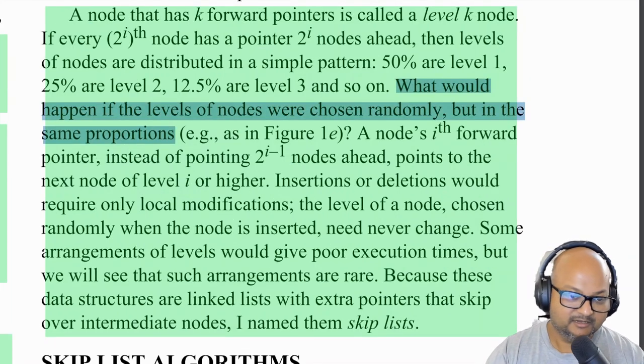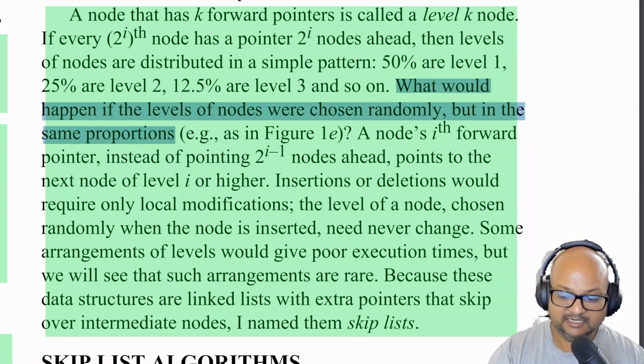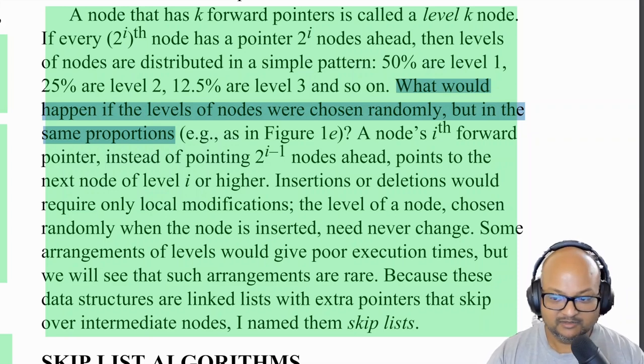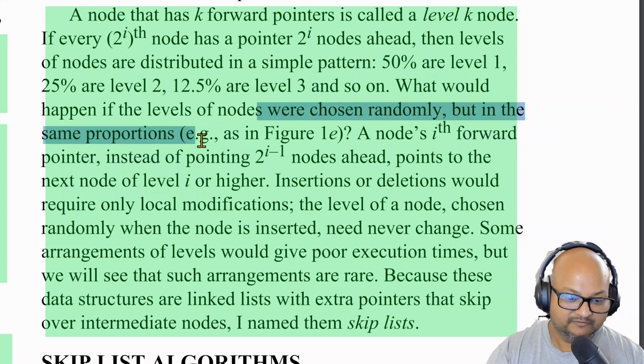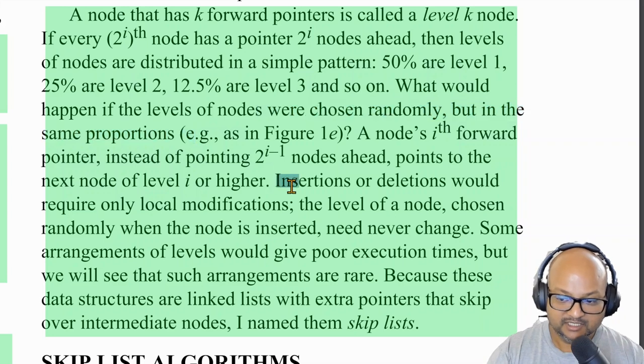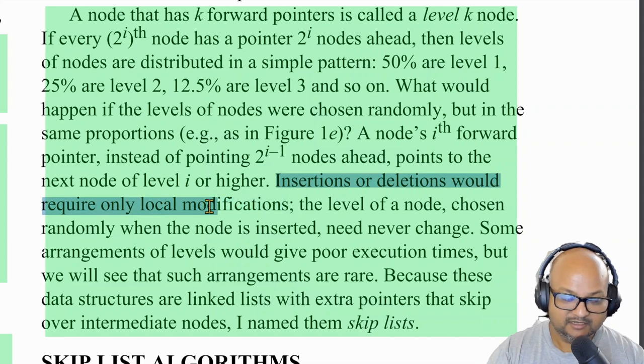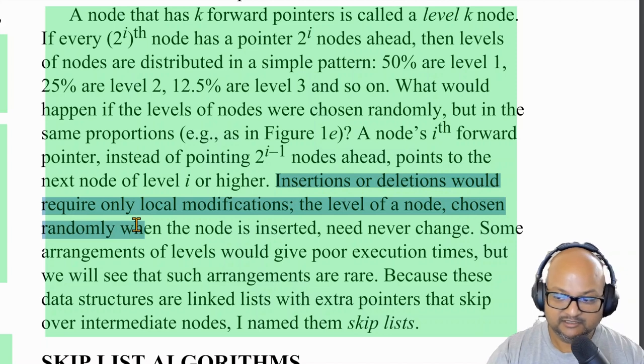The next core idea behind the skip list data structure is to get rid of the determinism with which these level k nodes are placed along the data structure. So you choose them essentially randomly, but in these same proportions where the number of level k nodes is approximately one over two to the power of k. And this gives you the really nice property that insertions and deletions only require local modifications at the level of a node and not throughout the data structure.